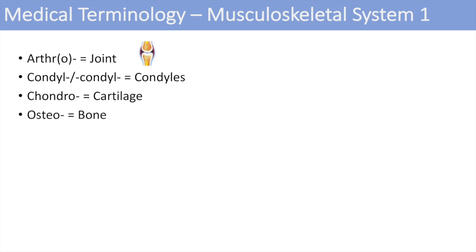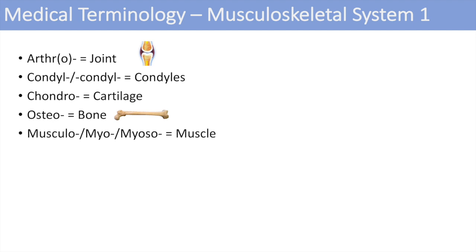The next one is osteo, which means bone — you can think of osteopathy, a disease of the bone. The next one is musculo, myo, or myosal, which means muscle. Each of these can be used in different settings. You can think of musculoskeletal, or you can think of myosarcoma, which is a cancer of the muscle.